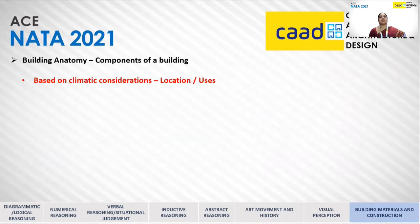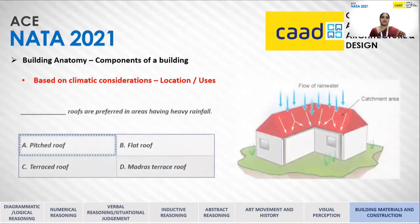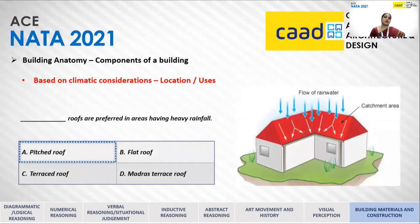Sometimes, based on climatic considerations, questions about materials or components will be asked — specifically the location or context where certain components are predominantly used. For example, what type of roofs are preferred in areas having heavy rainfall?